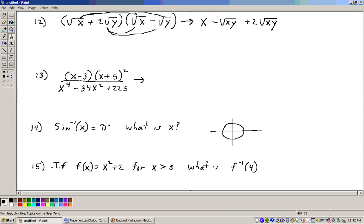And then two square roots of y times a minus y is minus two. Positive two times a minus one is minus two square root of y times the square root of y is the square root of y squared, which is y.